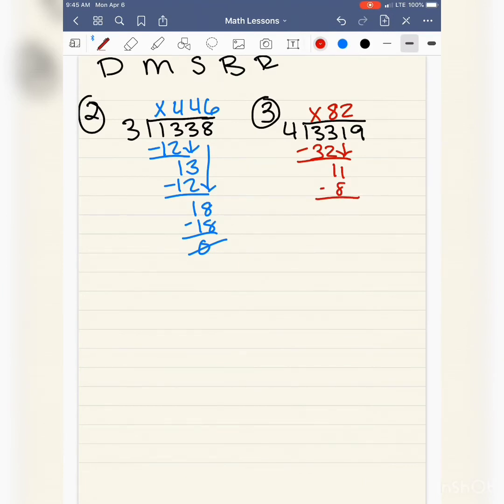When I subtract, I have 3 left over, and then I bring down my 9. 4 will go into 39 how many times? I really hope you're practicing your multiplication facts. It's very important. We're going to 39, 9 times. 9 times 4 is 36. And we have 3 left over. So this is the first one that we have a remainder. There's nothing else to bring down.